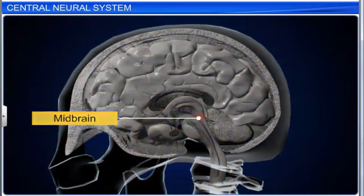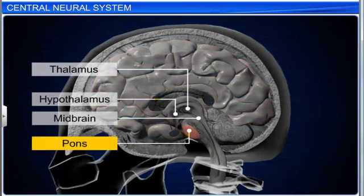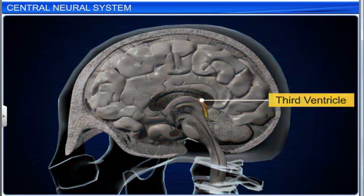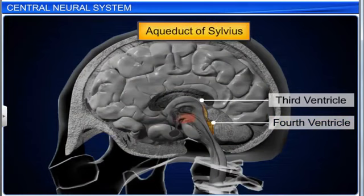The midbrain is located between the thalamus and hypothalamus of the forebrain and the pons of the hindbrain. The cerebral aqueduct, containing cerebrospinal fluid, passes through the midbrain and connects the third ventricle to the fourth ventricle of the brain. It is also called the aqueduct of Sylvius.